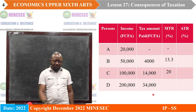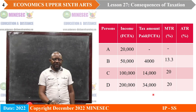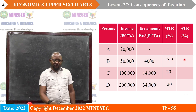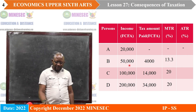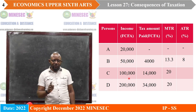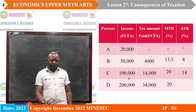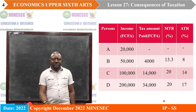Now let's go to the last column — average tax rate. The first value is a dash. The second: 4,000 divided by 50,000 times 100 gives 8%. Next: 14,000 divided by 100,000 times 100 gives 14%. And finally: 34,000 divided by 200,000 times 100 gives 17%.